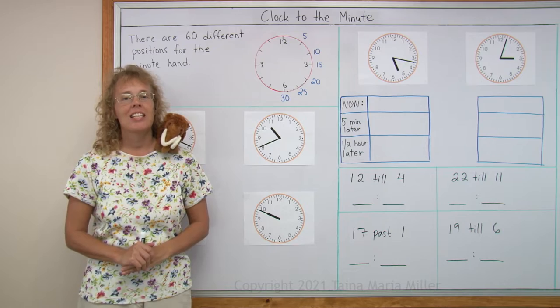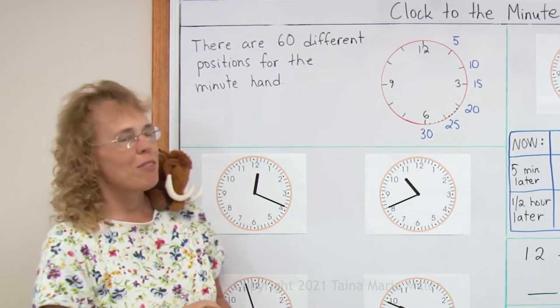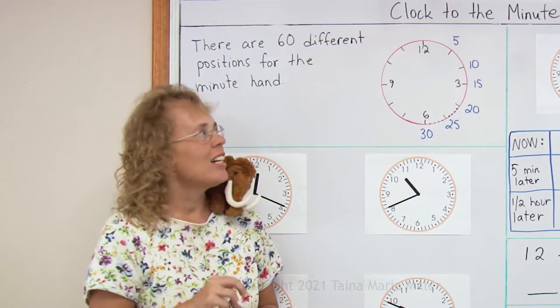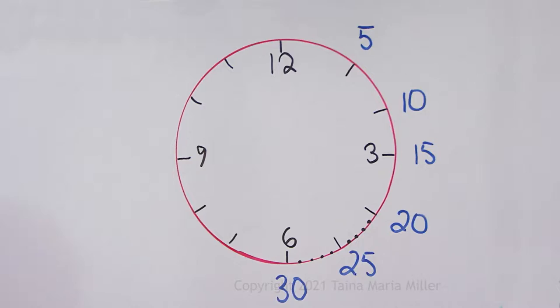In this lesson we are studying the clock to the minute. And you have probably noticed already that on the clock face we have studied the minutes, how the numbers for the minutes are not on the clock face, and how they go by fives: 5, 10, 15, 20, and so on.